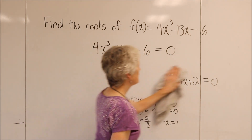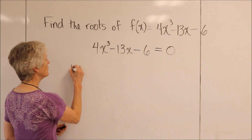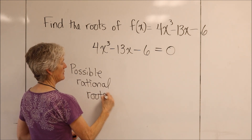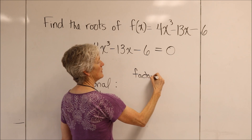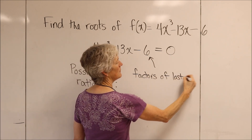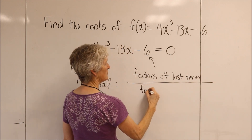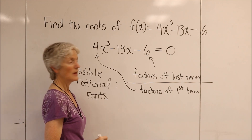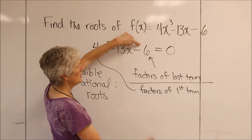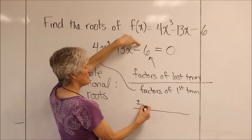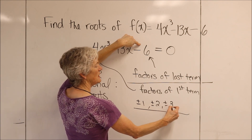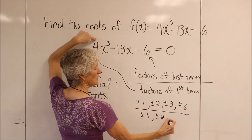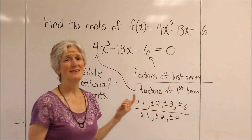So if I want to find a list of possible rational roots for this equation, my list is going to be factors of my last term divided by factors of my first term — and I really need the coefficient of the first term. I'm going to have a long list. Factors of negative 6: plus or minus 1, plus or minus 2, plus or minus 3, plus or minus 6, divided by factors of my first term: plus or minus 1, plus or minus 2, plus or minus 4. Unfortunately, this gives us tons of options.